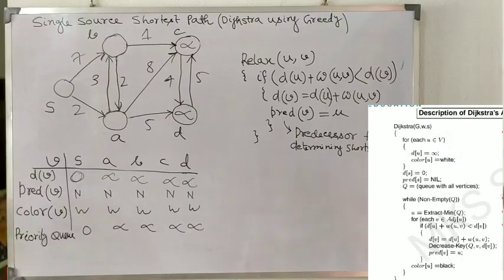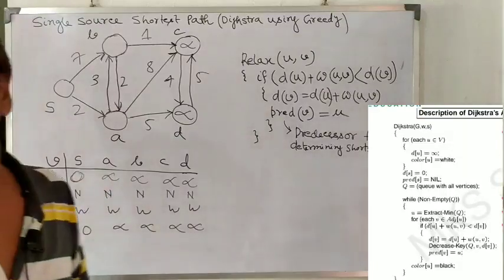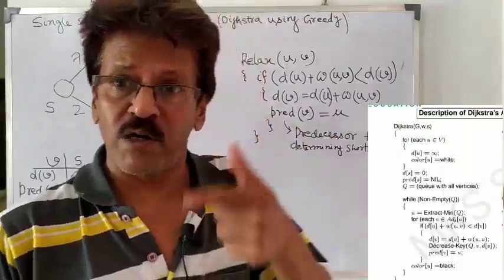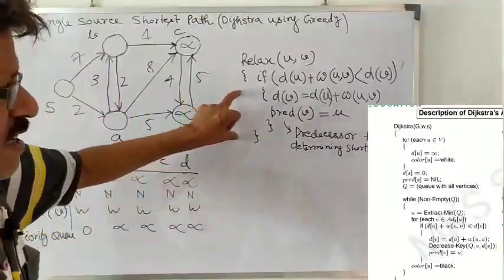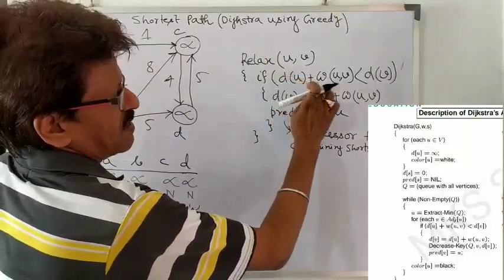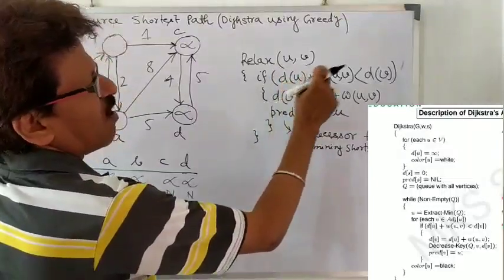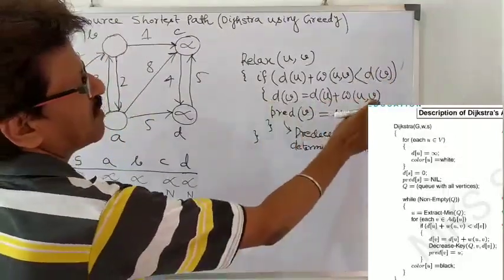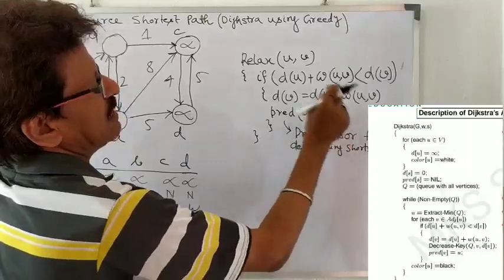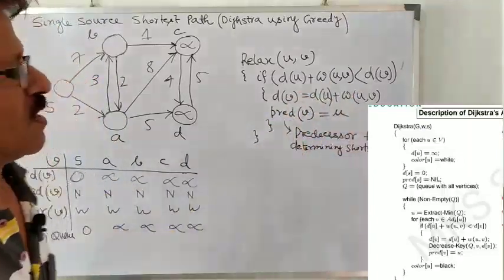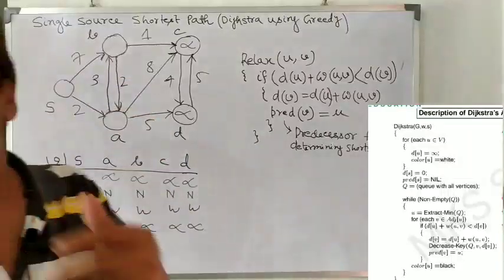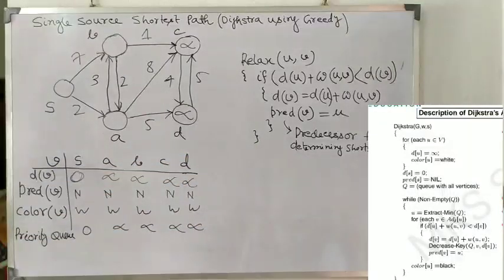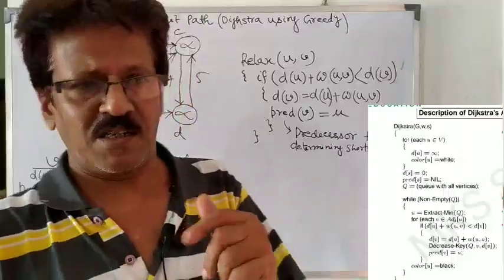Next, we come to the while loop: until or unless the queue is empty, if there is any vertex left, we have to continue the while loop. Within the while loop, we apply the for loop where we find the relax algorithm. The relax algorithm means we always update this value — if the present distance plus the new weight of the edge is less than D(v), then we update D(v) and write the predecessor of v as u. That means we reached from u to v. And whenever applying this, we set the color as red if processed, otherwise white.